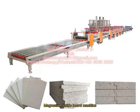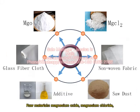Magnesium Oxide Board Machine. Raw materials: Magnesium Oxide, Magnesium Chloride, Glass Fiber Cloth, Non-Woven Fabric, Additives, Sawdust.